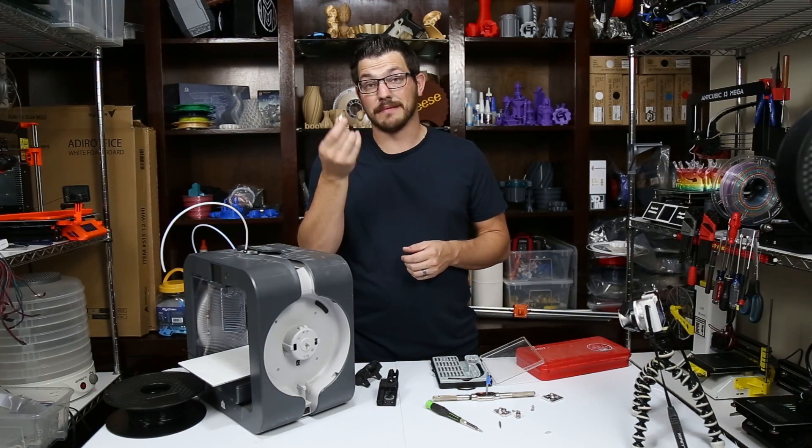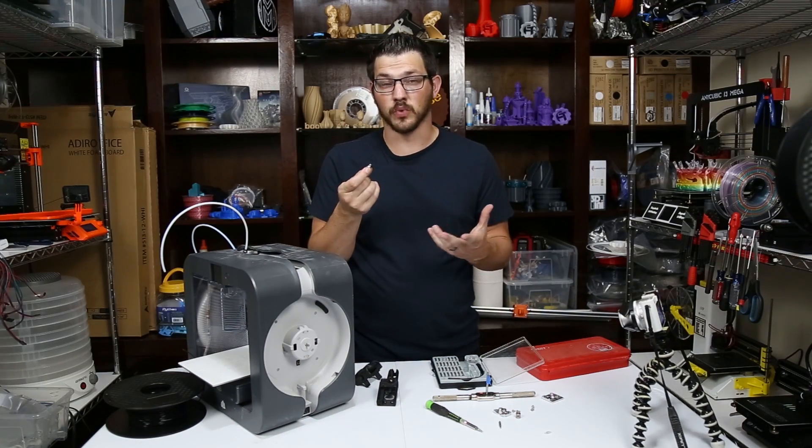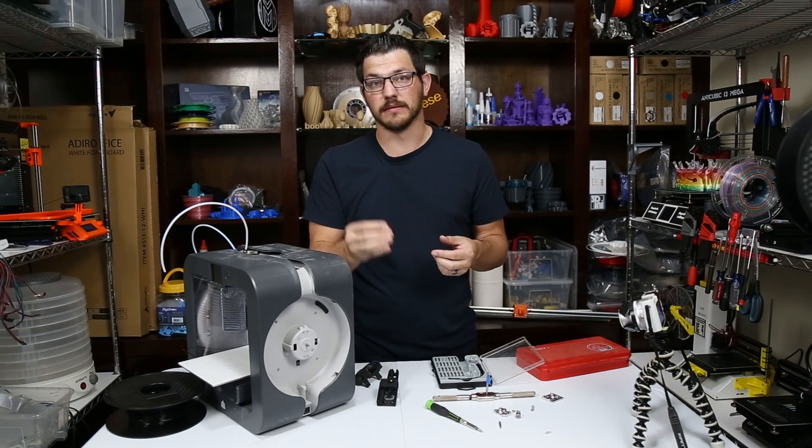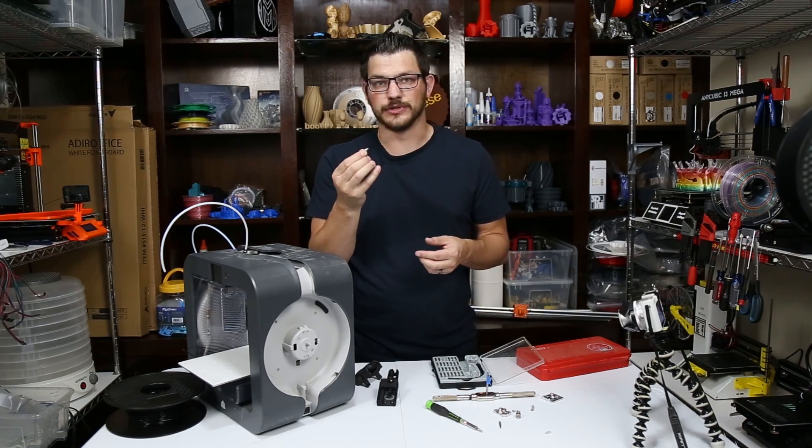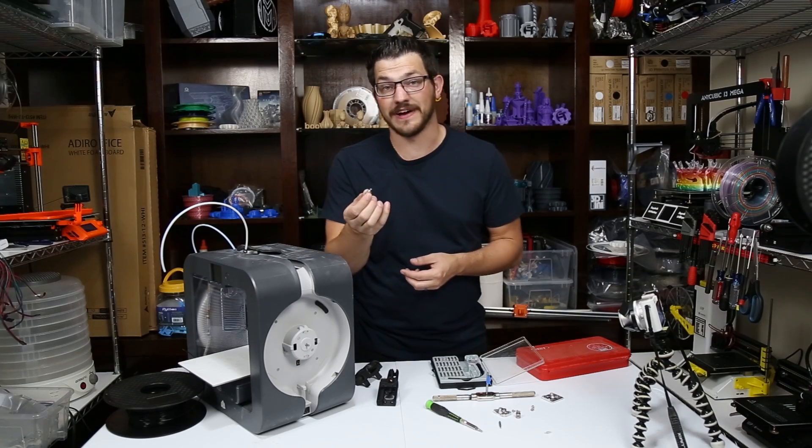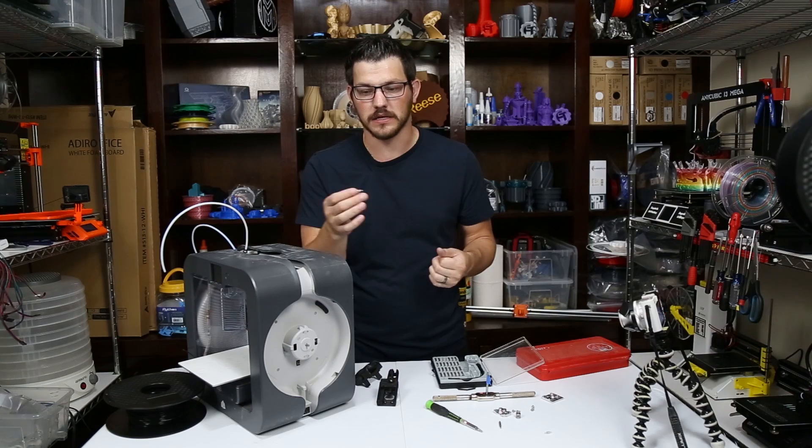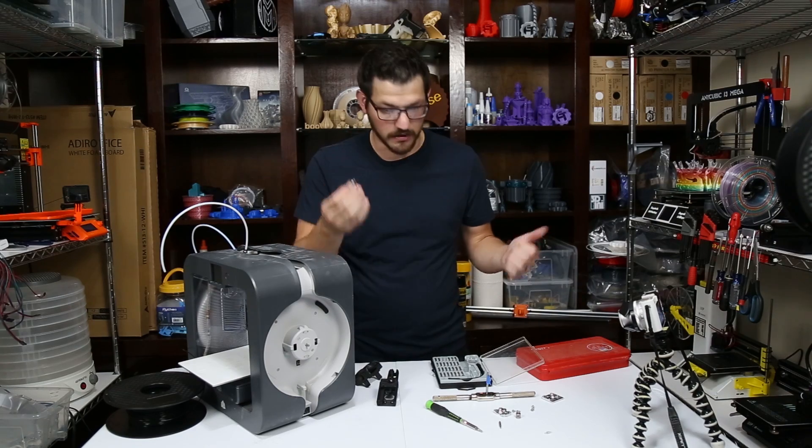So the one I'm using is actually an M5. You could make an M6 work, I think it's a little bit too big, but this is an M5 push fitting and I'll put a link down below to where you can get these. They're super cheap, like a few dollars for five or ten of them on Amazon or eBay, even cheaper on AliExpress if you want to wait a year. But these work out really well.